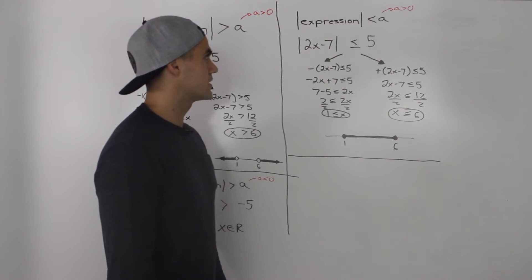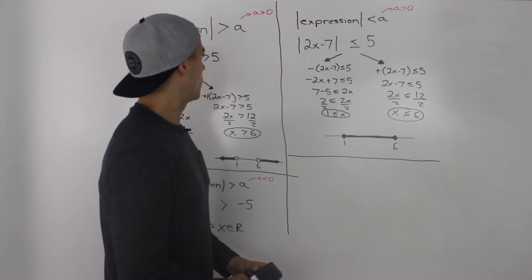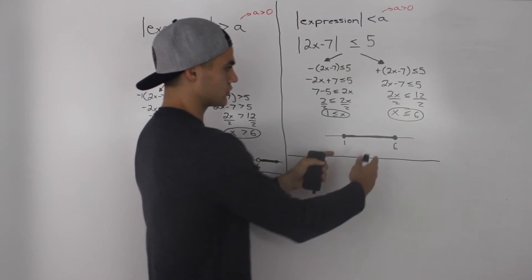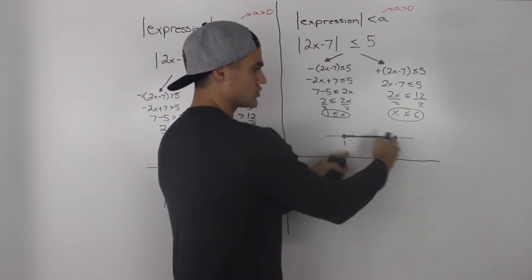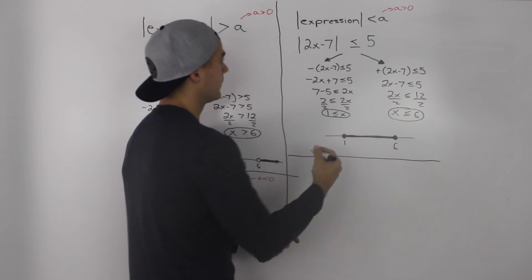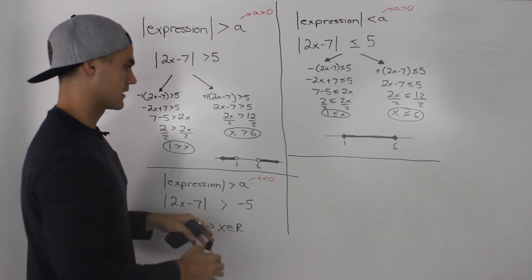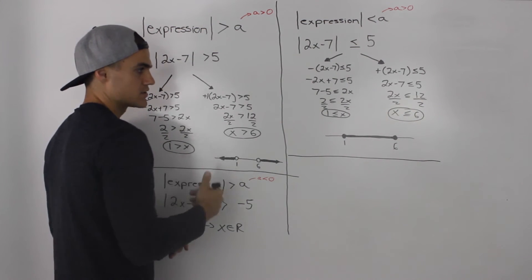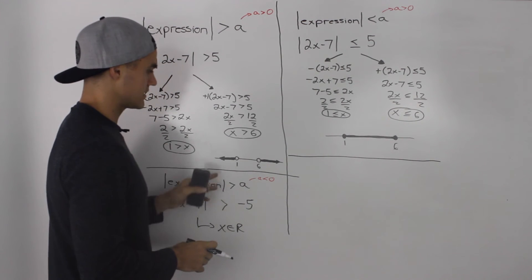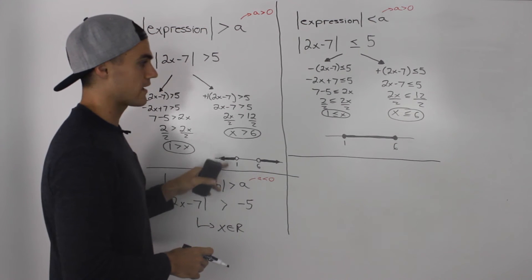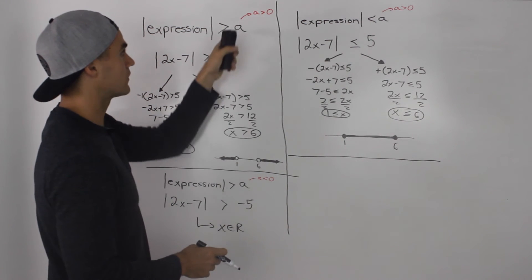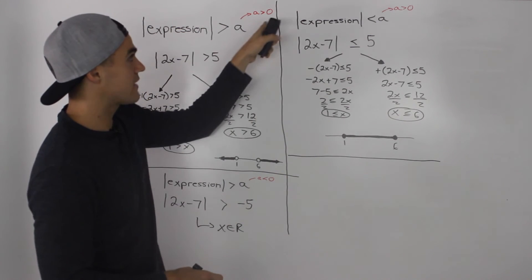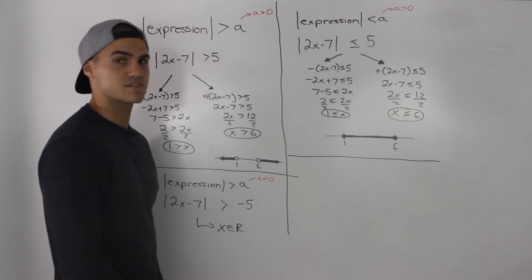Notice the pattern: whenever you have a less than inequality with a positive value, you'll always get a solution where x must be between two numbers. Whenever you have a greater than inequality with a positive value, you'll always get a solution where x must be greater than one number or less than another. Consider this pattern for number lines depending on whether it's a greater than or less than inequality.